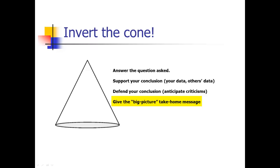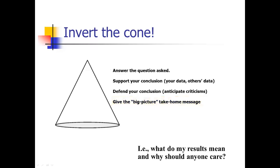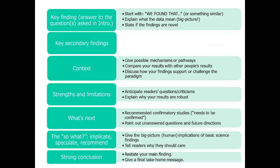You started with something specific; now you're going to do something very general. Give the big picture — what are the big implications of your research. Give implications, recommendations, and the big picture take-home message. In other words, the discussion should tell you: what do my results mean, and why should anyone care? A lot of times people spend a lot of time saying what the results mean, but too little time saying why those results are important. If somebody outside your niche area reads your paper, they're not going to know why they should care. You've got to make them care.